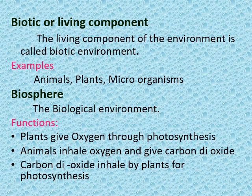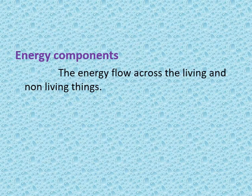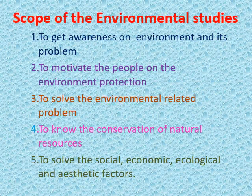Biotic or living component: All the living components of the environment are called biotic. Examples are animals, plants, and human beings. The biological environment is biosphere. Plants give oxygen; animals inhale oxygen; carbon dioxide is taken up by photosynthesis. The energy component refers to the energy flow across living and non-living things. Plants take up sunlight from the sun and produce food by the process of photosynthesis.